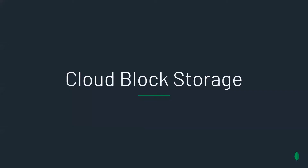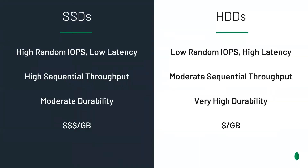Now let's talk about cloud block storage. There are two technologies that underpin storage these days: solid state drives and hard disk drives. SSDs have high random IOPS, low latency, and high sequential throughput, but they're moderately durable and fairly expensive. Hard disks on the other hand have low random IOPS and high latency, moderate sequential throughput, but they're highly durable and fairly cheap.